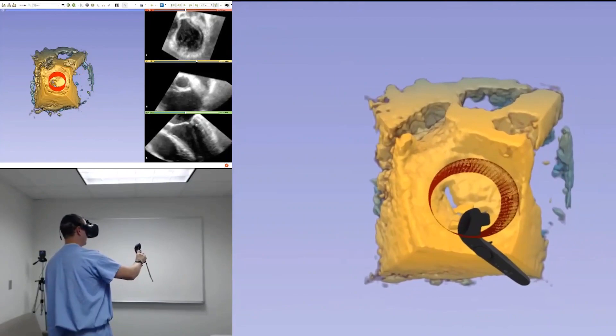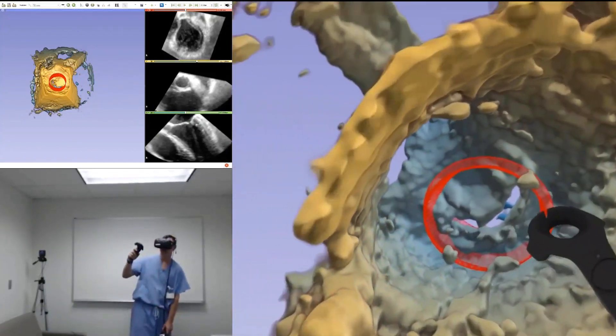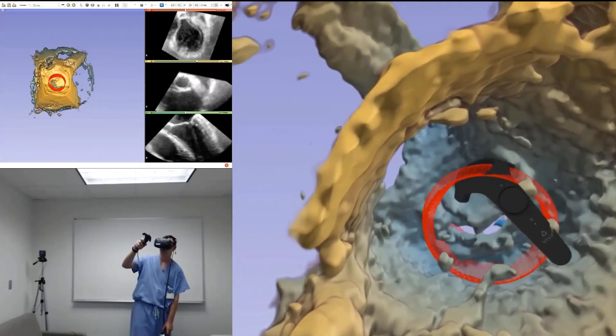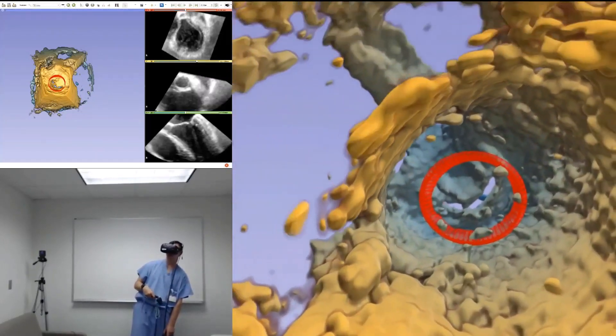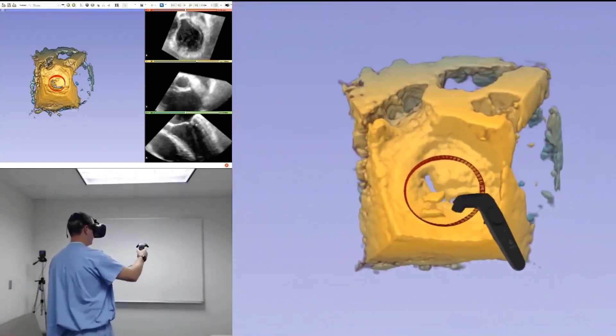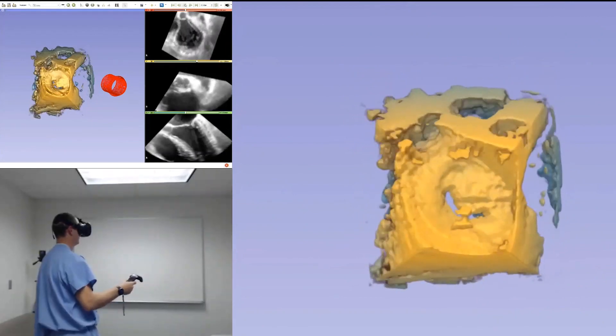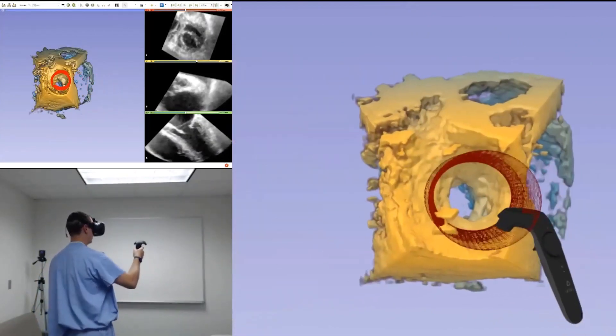We first place the device in systole, then in diastole.